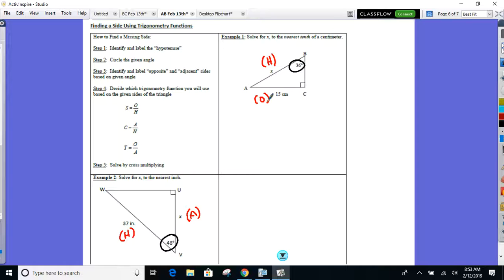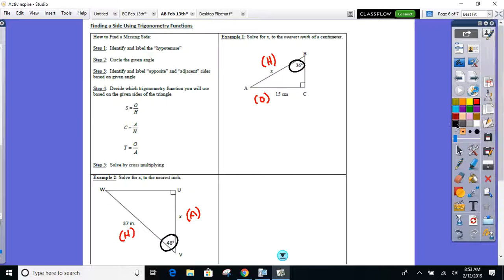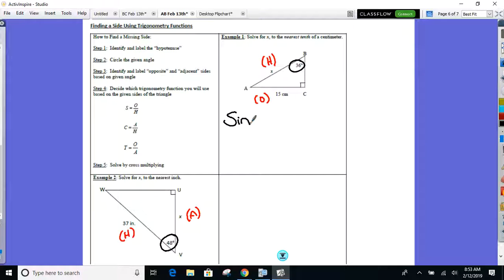Now, go back to Sohcahtoa or your notes. What ratio can I use with opposite and hypotenuse? The sine. Not sin. The sine ratio. So, I'm going to use sine. What's that angle measure? 36. Is equal to? Hold on. What's sine ratio equal to? Opposite. What's the opposite side? 15 over hypotenuse? X.